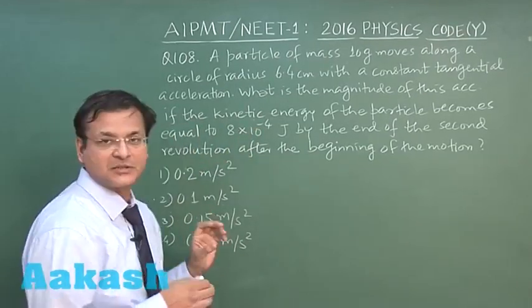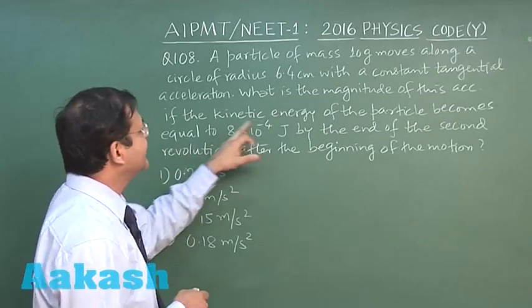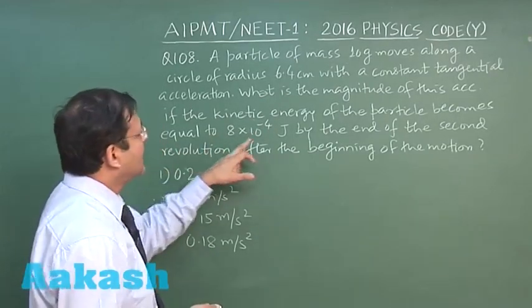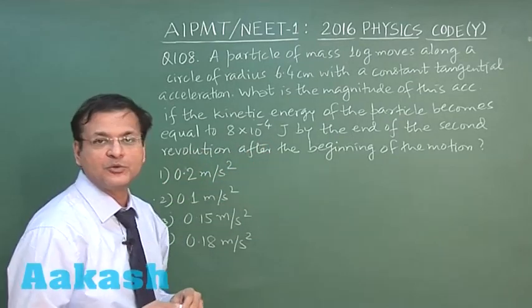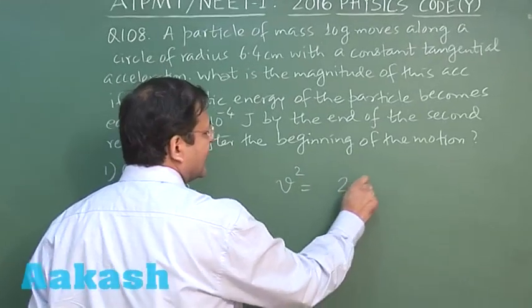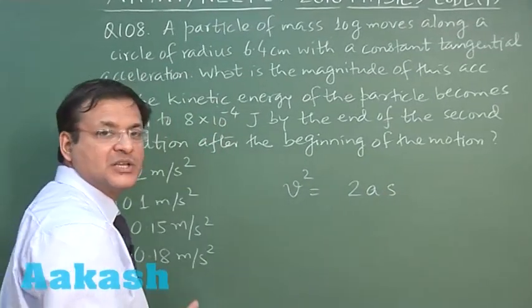Normal acceleration also you can use. What is the magnitude of this acceleration? You have to calculate. Kinetic energy has been given, that means half mv square has been given and by the end of second revolution. Let us suppose you are using the formula v² = u² + 2As.